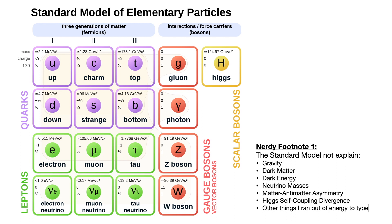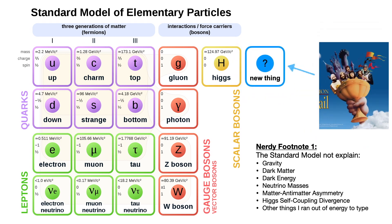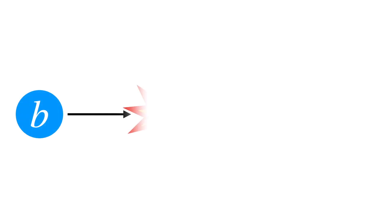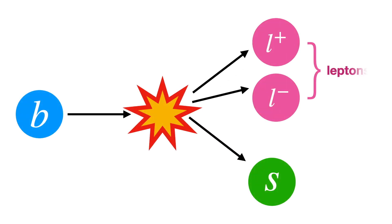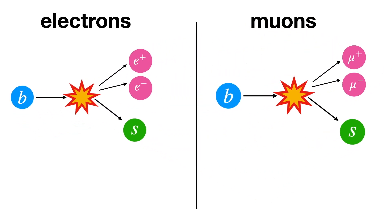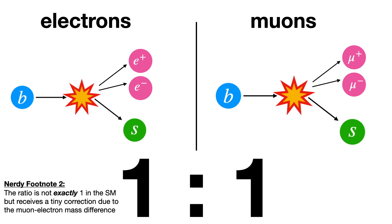The holy grail of particle physics analysis is to find something new that goes beyond this. The result announced this week measures decays of beauty quarks to strange quarks and two leptons, which can either be electrons or their heavier cousins muons. In the Standard Model, these two processes should happen at exactly the same rate, but the latest results do not seem to find this.